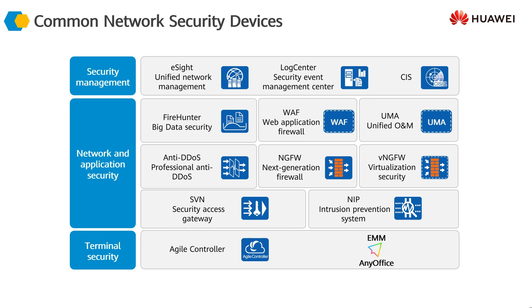The firewalls we work with today are called next generation firewalls. There have been roughly two to four generations of firewalls since the mid-1990s up to the late 2010s — about 20 to 25 years. Current next generation firewalls are much more advanced, sophisticated, and intelligent compared to the original firewall technology. We will look at these devices one by one in the next few slides. We also have a virtualized version of Huawei's next generation firewall, which is common due to virtualization in data center and cloud infrastructures.